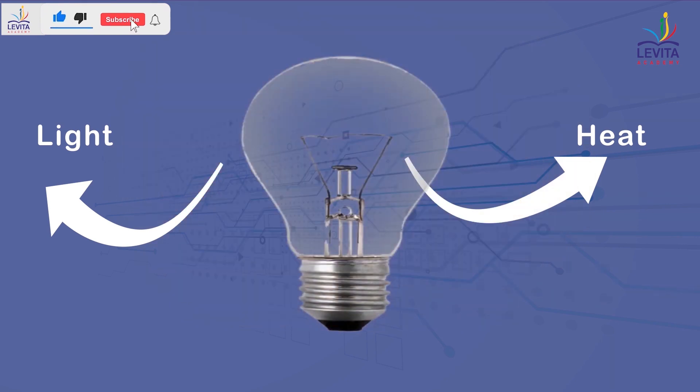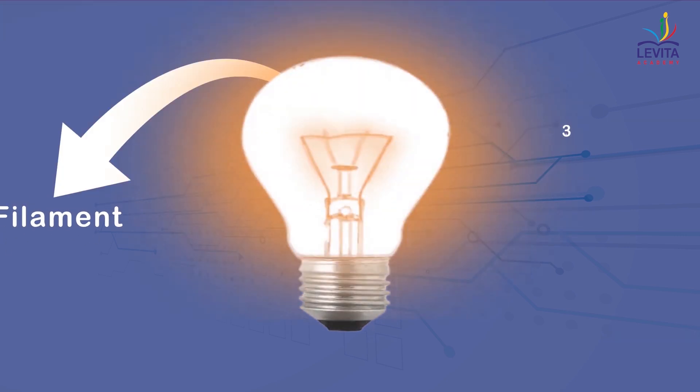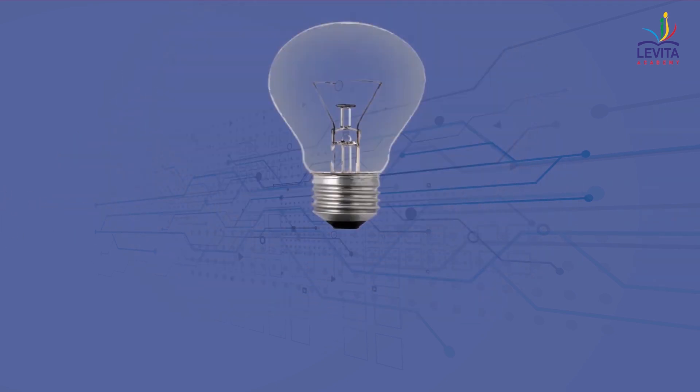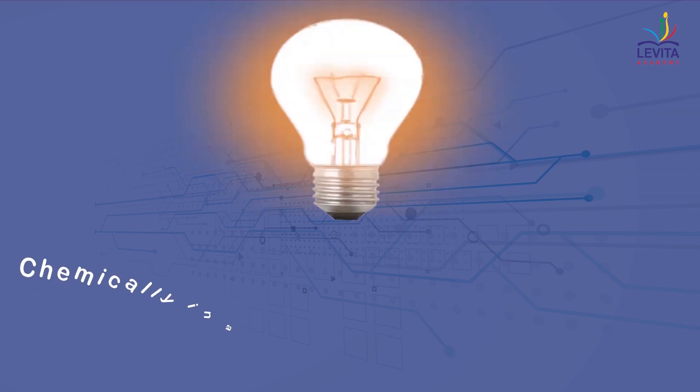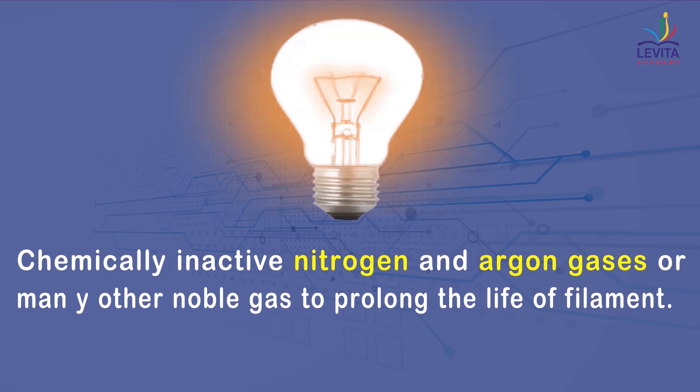In these bulbs, tungsten is used because of the high melting point of around 3,380 degrees Celsius. Additionally, the filament should be thermally isolated as much as possible using insulating support and are usually filled with chemically inactive nitrogen and argon gases or other noble gases to prolong the life of filament.